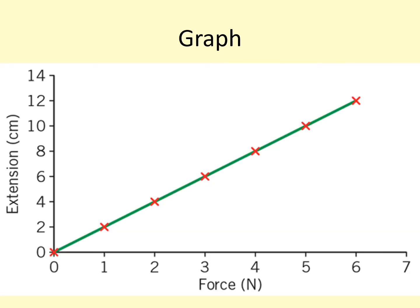Here's a graph showing the same results. You've got force along the bottom — your independent variable always goes along the bottom of your graph — and extension in centimetres up the side. The dependent variable always goes up the side of your graph. You can see this lovely straight line, and that is because the force and the extension are directly proportional. When the force increases, the extension also increases, giving us this line going upwards.